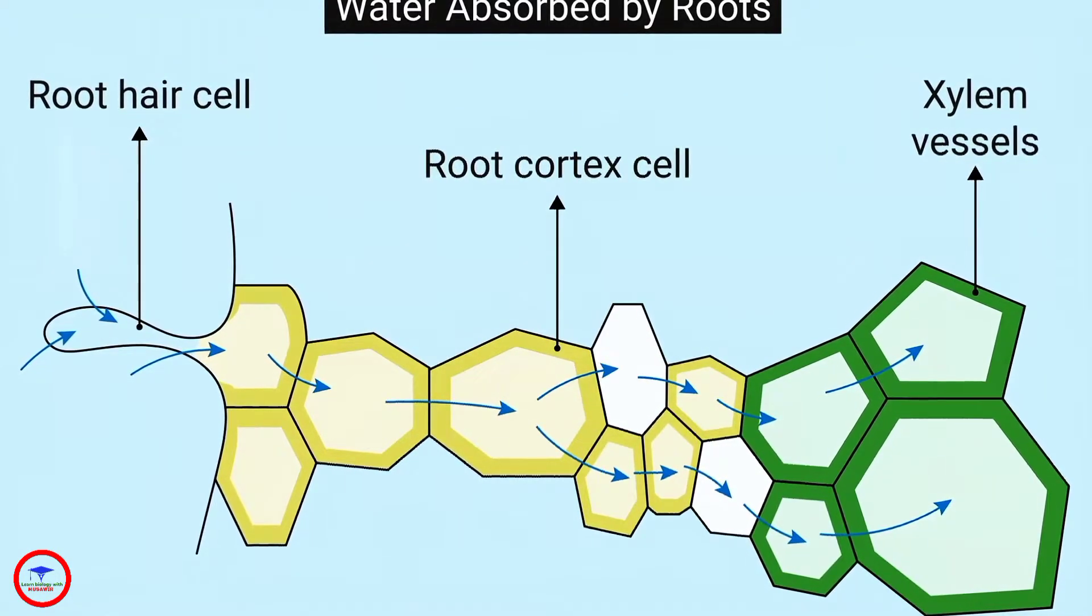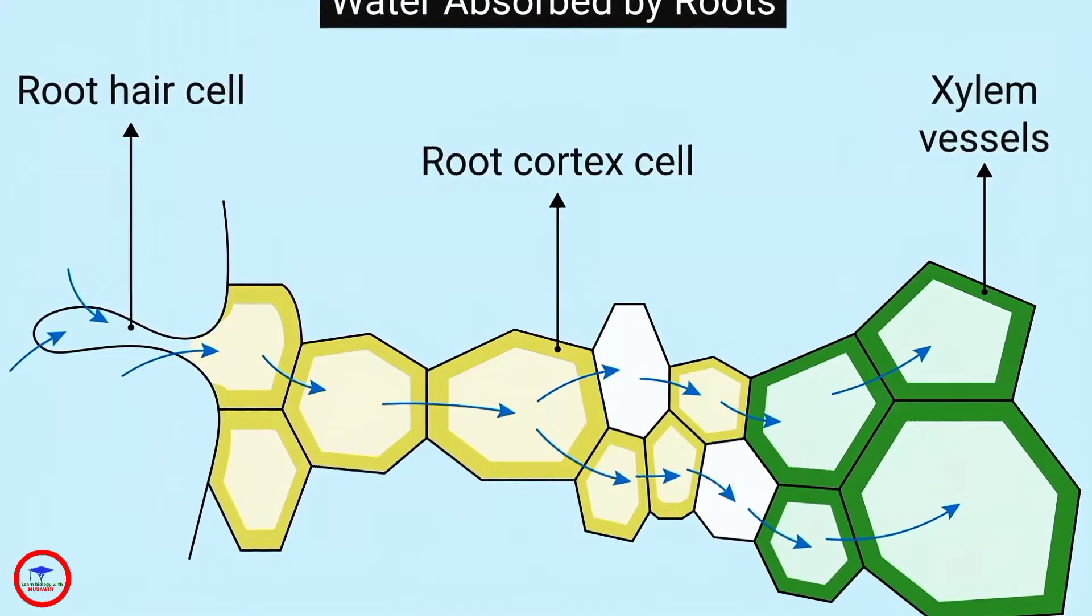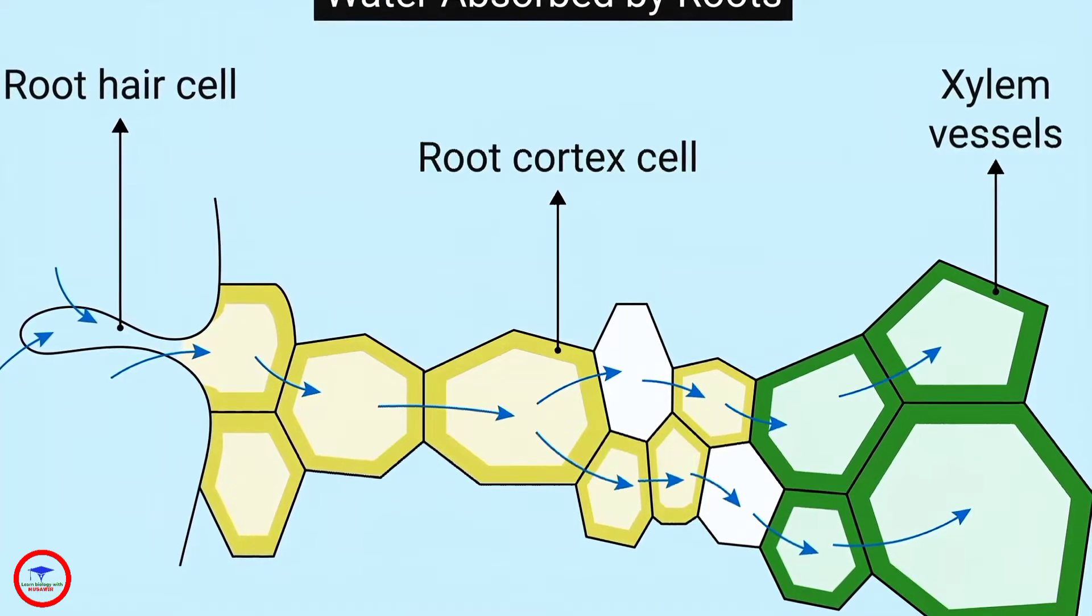In this video, we are going to look at how plants get water, which is absorbed by the roots, all the way to the leaves, as well as how food made in the leaves gets to the roots.